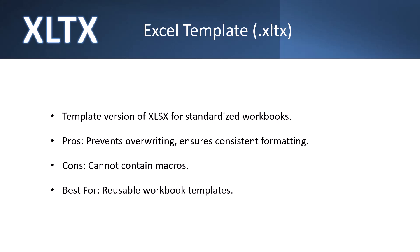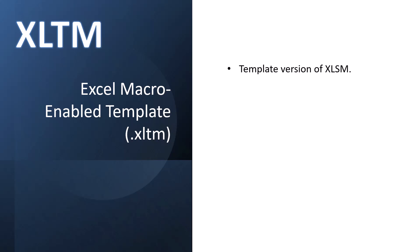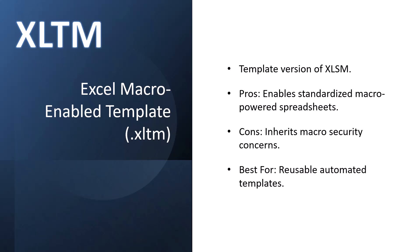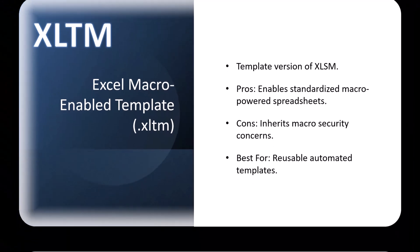If you need a template that can also store macros, that's when you'll use the XLTM file format — the macro-enabled template. This is the templated version of an XLSM file. The pros: they enable standardized macro-powered spreadsheets. The cons: they inherit all the macro security concerns of an XLSM file. These are best used for reusable automated templates.